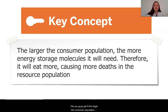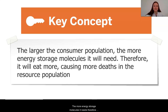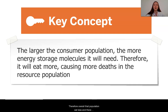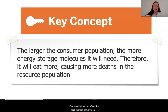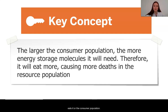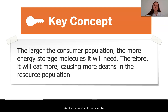The larger the consumer population — the furbles in this case — the more energy storage molecules it needs, and therefore it will eat more, causing more deaths in the resource population. We saw the opposite happen: the smaller the consumer population, the less energy storage molecules it will need, and therefore that population will eat less, resulting in fewer deaths in the resource population. So there we have it — one way we can affect the deaths occurring in a population is by manipulating the consumer population. I'm really excited to hear feedback that we can talk about in our next lesson.